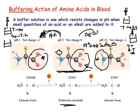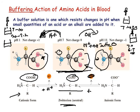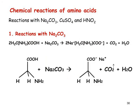This diagram shows the same buffering process: the zwitterion in the middle can absorb H⁺ by the hydrogen going onto the COO⁻, or absorb OH⁻ by losing an H from the NH3⁺ to give NH2, with that H⁺ combining with the OH⁻ to form water. We now need to look at three particular chemical reactions of amino acids: how they react with sodium carbonate, copper sulfate, and nitrous acid — HNO2, not nitric acid.